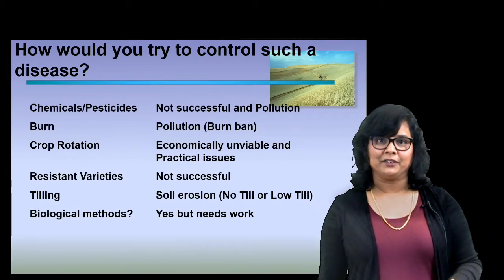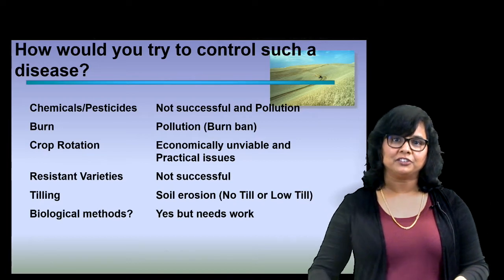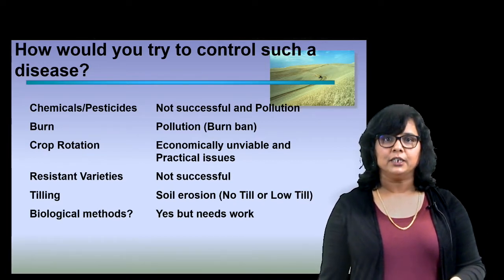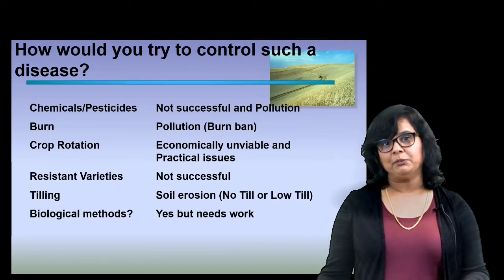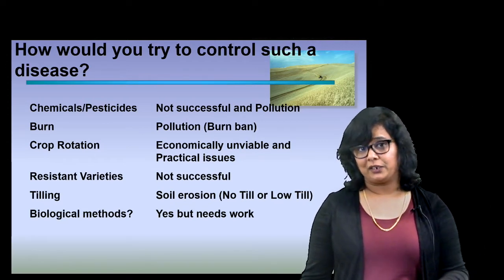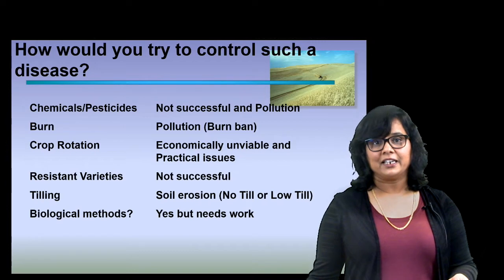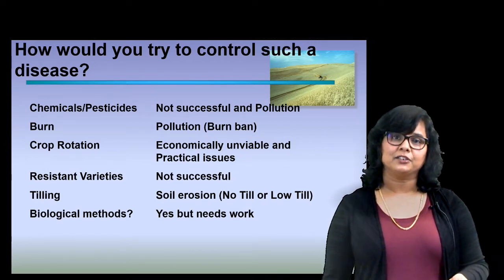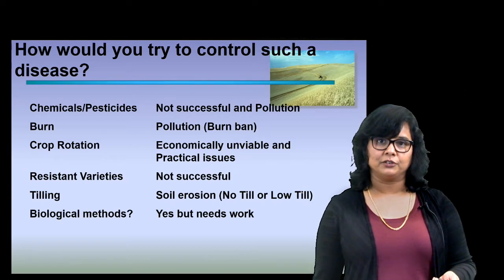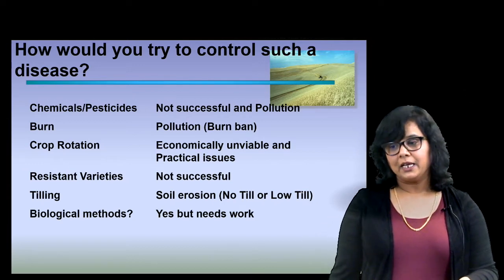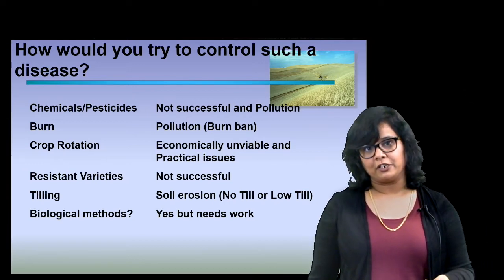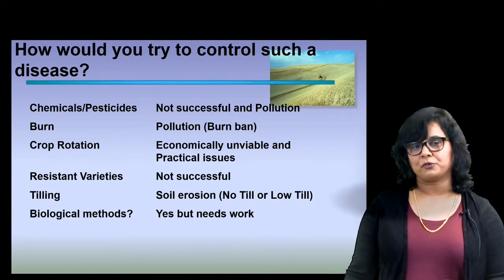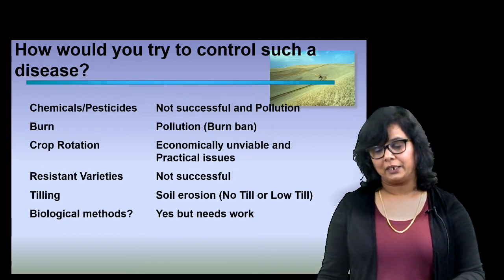Another option is that the stubble left on the ground after harvest can simply be burned. That's a very effective way of controlling the disease, except it causes severe air pollution — and in fact there's a ban in eastern Washington from burning these fields. Another way to do it is crop rotation: putting in a different crop disrupts the fungus and can get the disease under control.